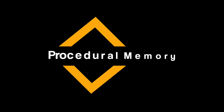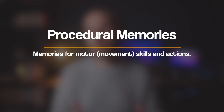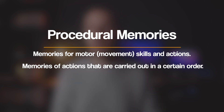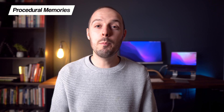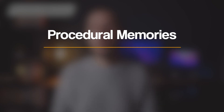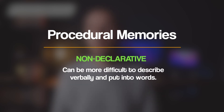The first type of long-term memory is known as procedural memory. Procedural memories relate to motor or movement skills and actions. It refers to memories of actions that are carried out in a certain order. You could also describe them as knowing how to do things — for example, knowing how to swim the breaststroke or ride a bike.